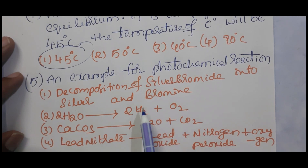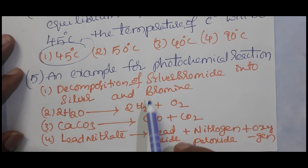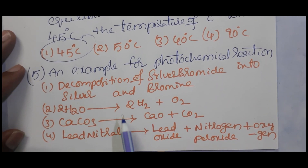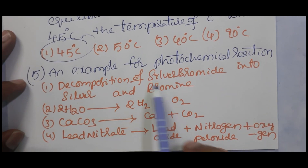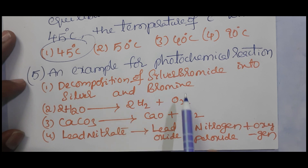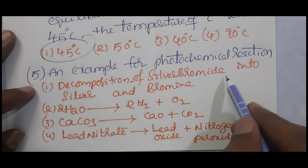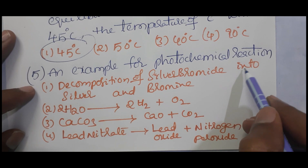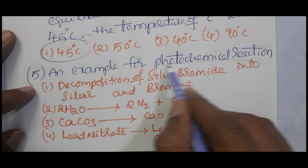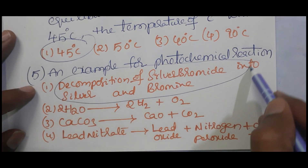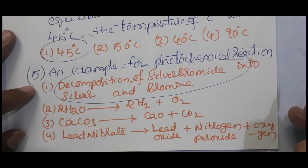An example for a photochemical reaction — this is from the chemical reactions and equations chapter, which is presently not in the 10th class syllabus. The example for a photochemical reaction is the decomposition of silver bromide into silver and bromine.